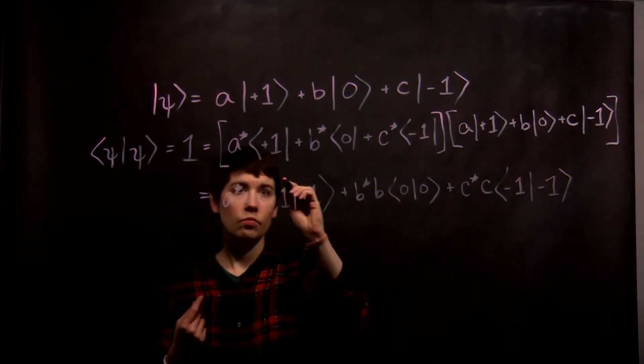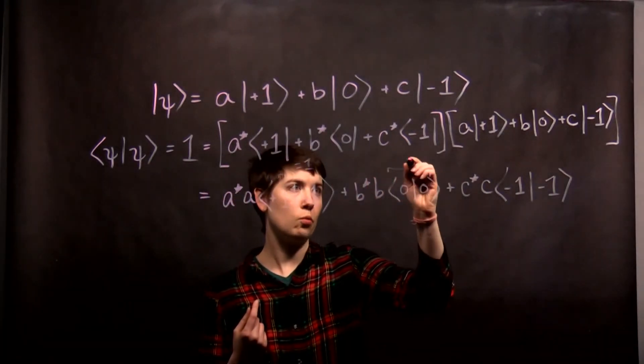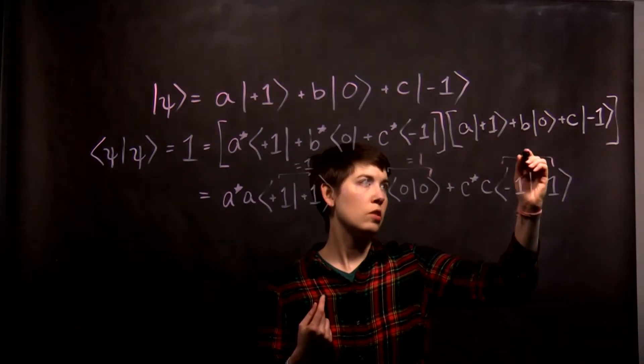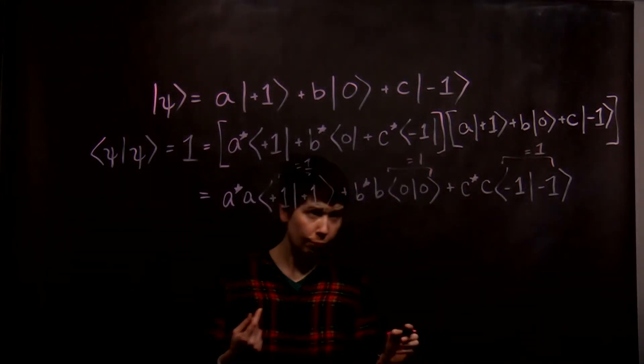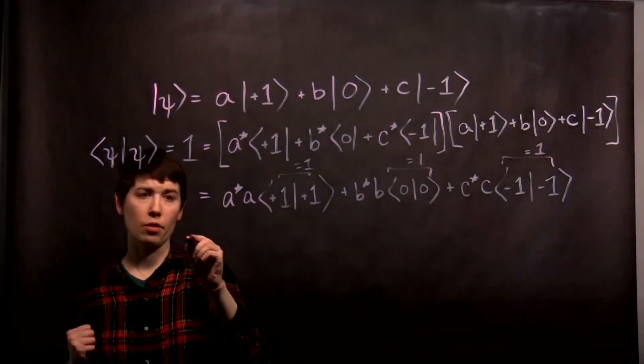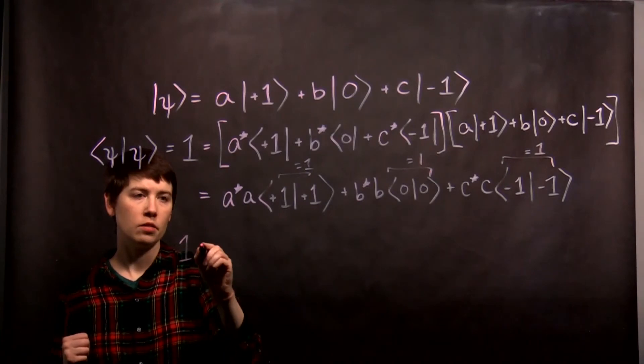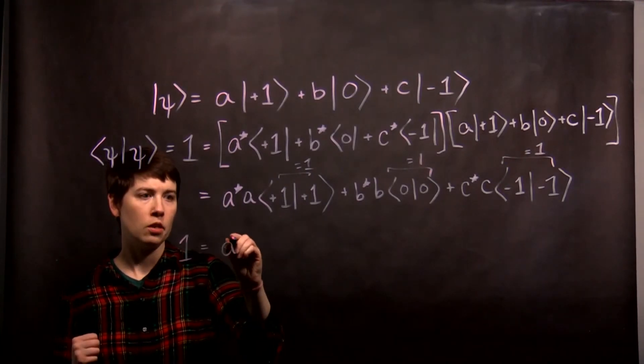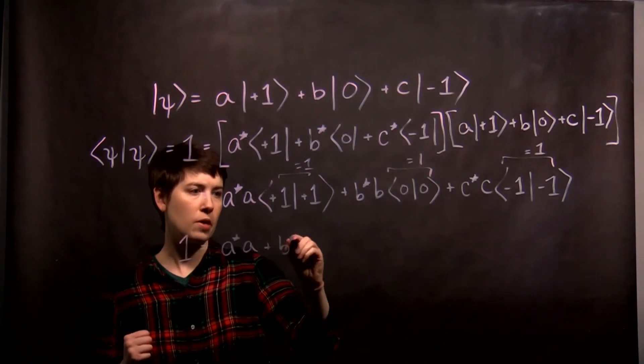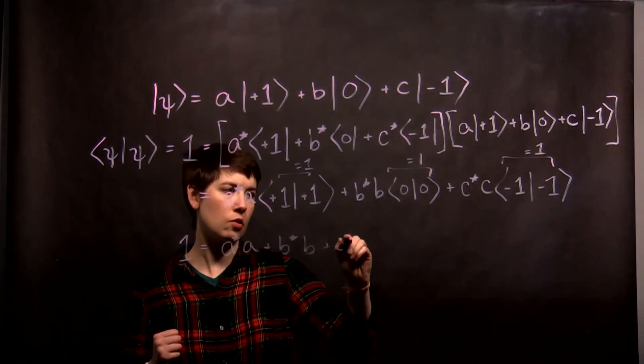And again, this is equal to 1, this is equal to 1, this is equal to 1. So what we're left with is that 1 must be equal to A star A plus B star B plus C star C.